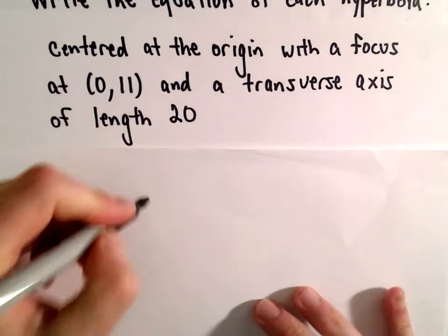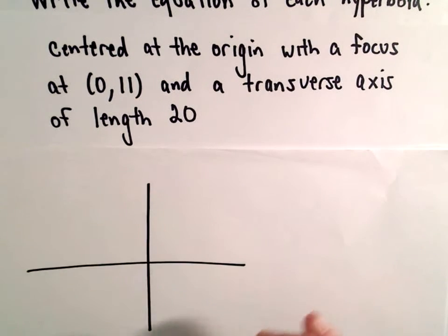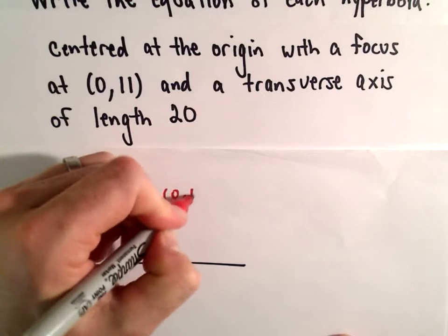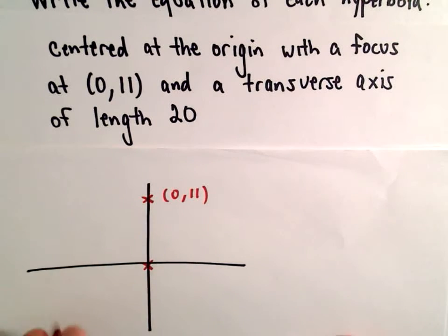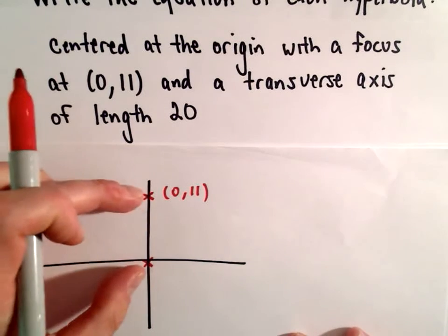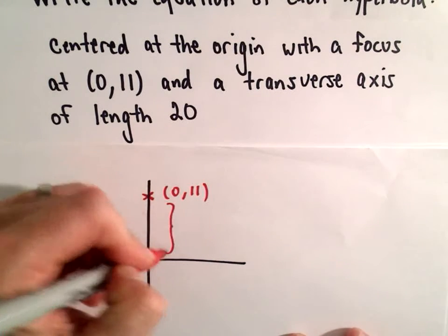So I'm going to make a little sketch here. What do we know? We know it's centered at the origin. We know that one of the foci is at (0,11). The distance from wherever it's centered to one of the foci, that's our c value.